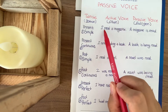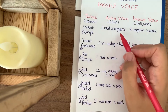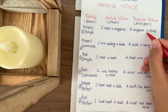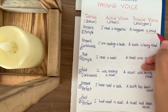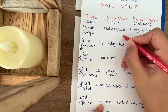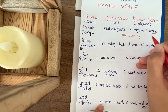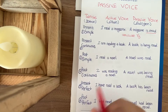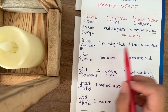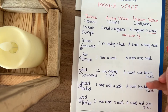In Present Simple, let's look at the active voice here. 'I read a magazine' — Ben dergi okurum. Magazine means dergi. Passive: 'Magazine is read' — Dergi okunur. Present Continuous: 'I am reading a book' — Ben şu an bir kitap okuyorum. Passive: 'A book is being read' — Kitap okunuyor.